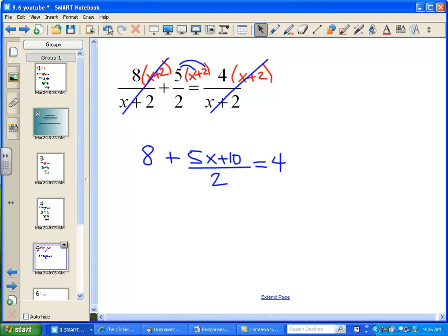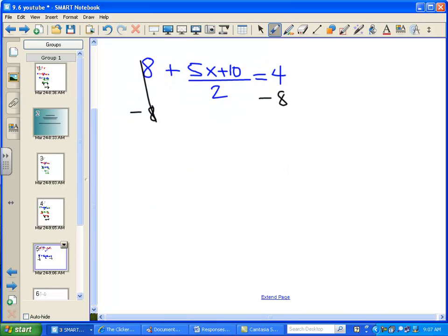So now the last step that I have is to multiply everything by 2. And you can actually make it even more simple at this step by just moving this 8 over, subtracting 8 from both sides. Gets me a little bit simpler situation: 5x plus 10 over 2 equals negative 4. So now if I multiply the left side by 2 and the right side by 2, I've got 5x plus 10 equals negative 8.